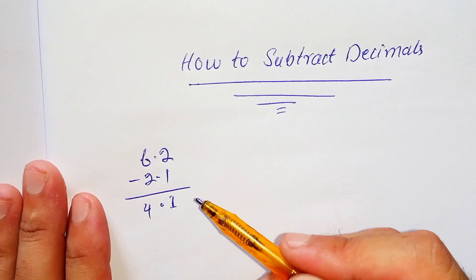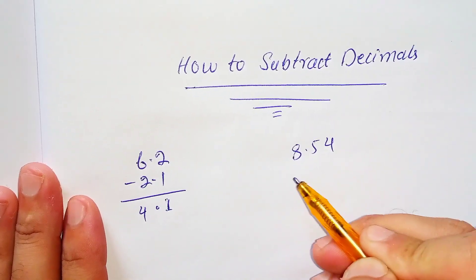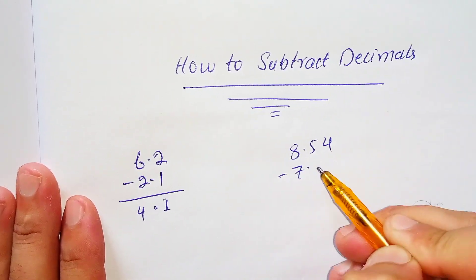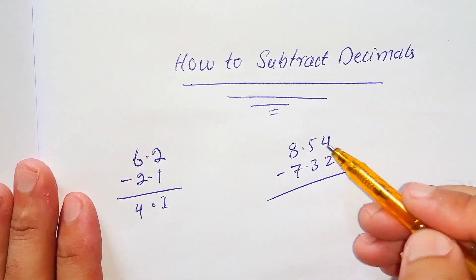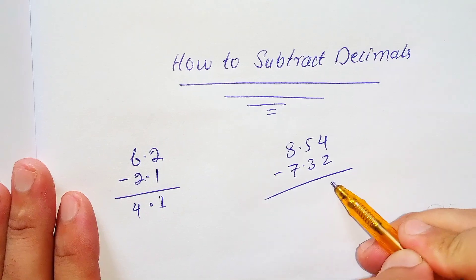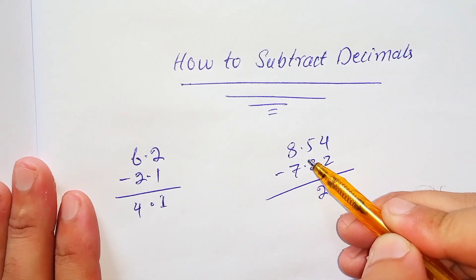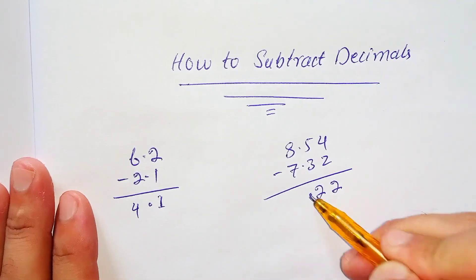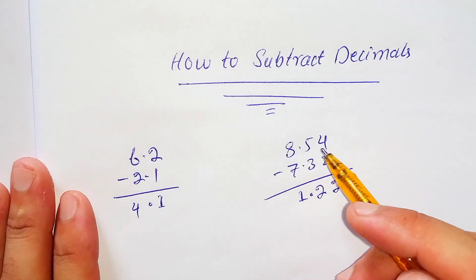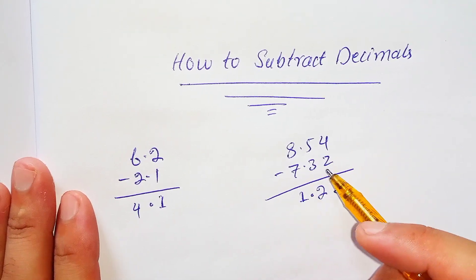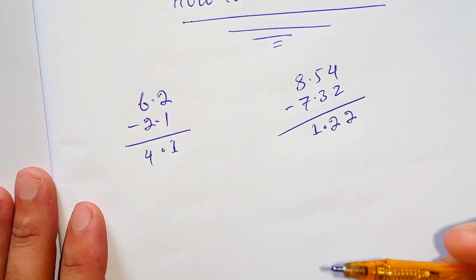Let's take another example: 8.54 minus 7.32. Using the same rule: 4 minus 2 is 2, 5 minus 3 is 2. Bring down the decimal point, and 8 minus 7 is 1. So 8.54 minus 7.32 is equal to 1.22.